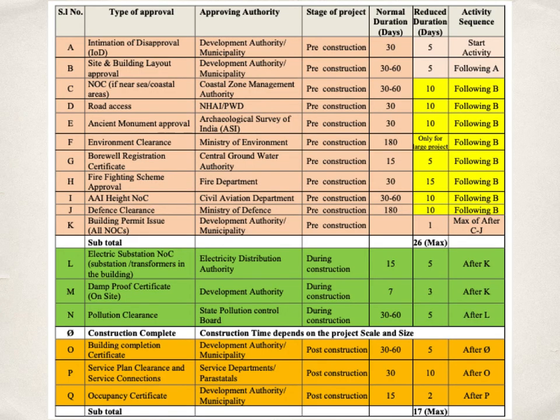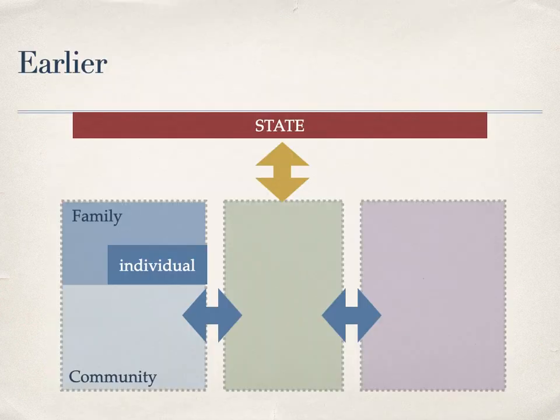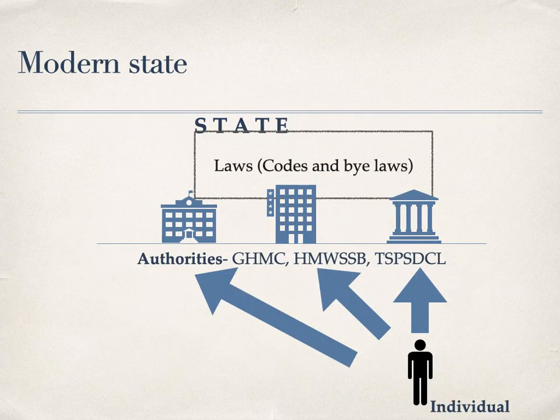This is an extract from the Model Building Codes and Bylaws 2016 showing the various authorities that need to give permissions depending on the project. So this is how earlier negotiations were made: the individual belonged to the family, which then belonged to a community. The various communities negotiated amongst each other and then with the state. The actions of the state are now strictly codified in laws and courts.